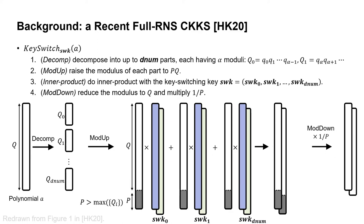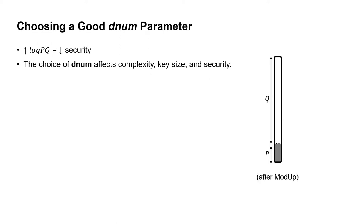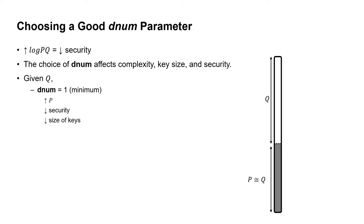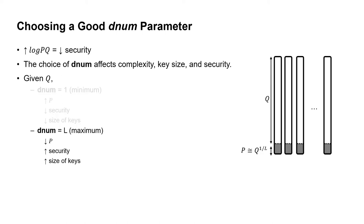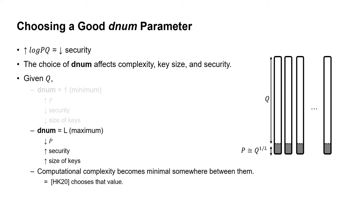The point is that we decompose the polynomial into multiple small polynomials. One thing to know is that a large log(PQ) value lowers security. The dNum parameter affects security as well as computational complexity and key size. For a fixed Q, when dNum is 1 (the minimum), the value P should almost equal Q, increasing PQ and decreasing security. However, it reduces the size of each key switching key to just one. On the other hand, we can increase dNum up to L (the maximum), where P would only be Q^(1/L), which increases security, but we need L-sized keys. The computational complexity becomes minimal somewhere between dNum equals 1 and L. In previous work, they choose the value that minimizes the number of modular multiplications.